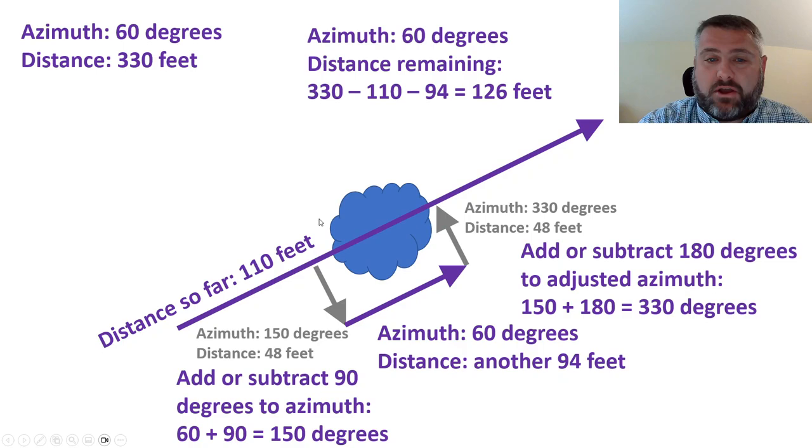It wouldn't have been wrong in this example to go the other way. You could have avoided it to what appears to be the left of the direction of their travel. There's no right or wrong way to do this. It's just whatever's going to work in the field.